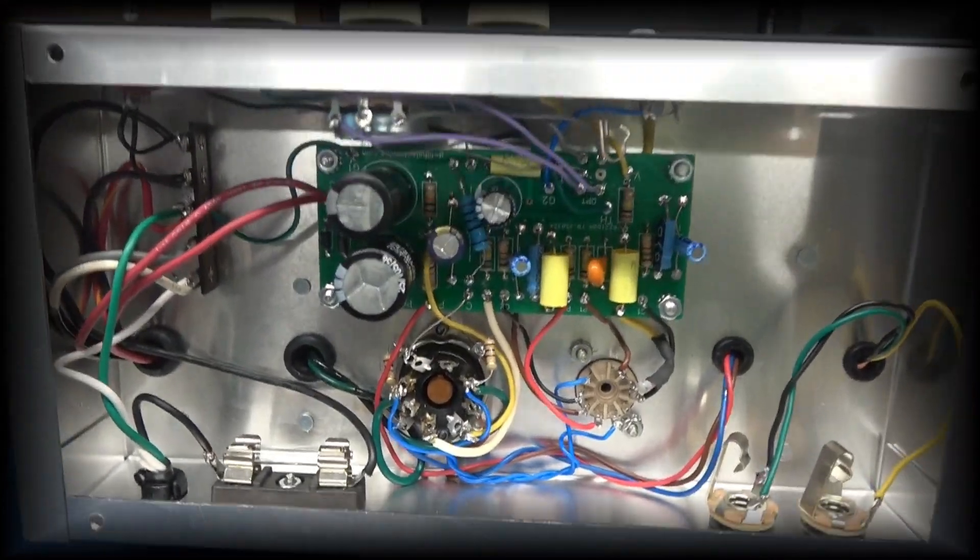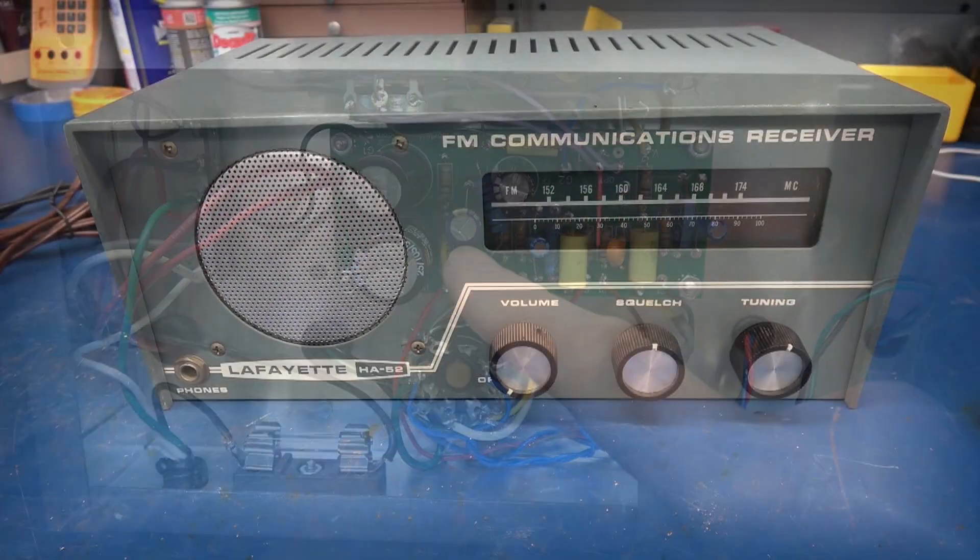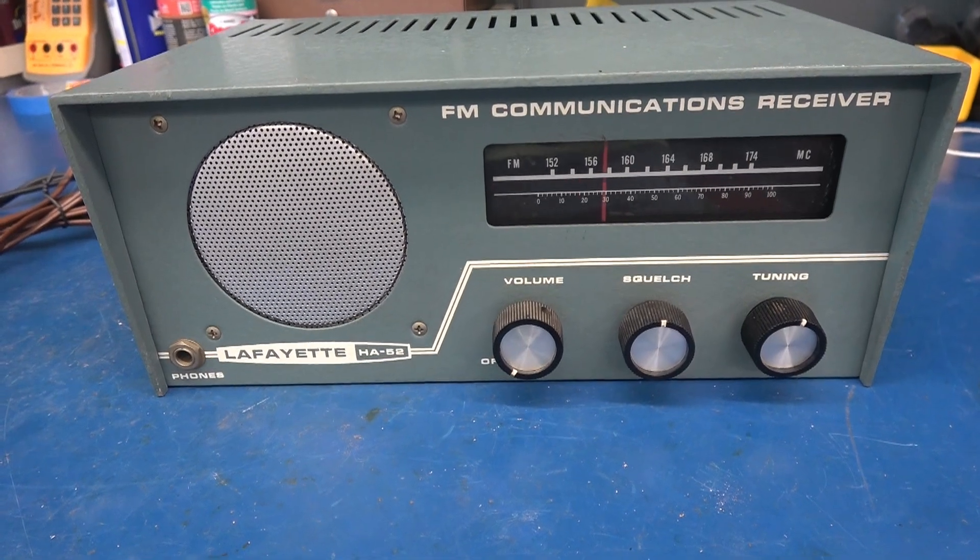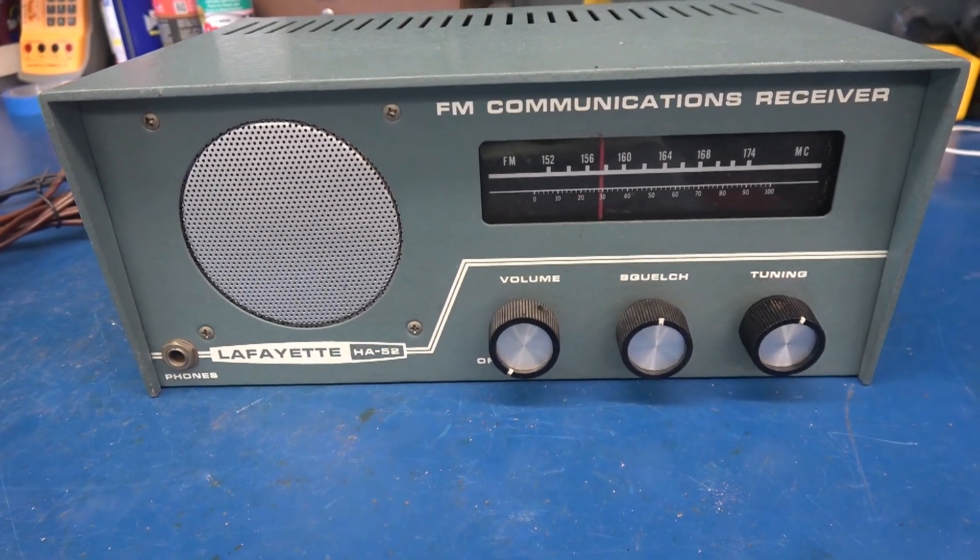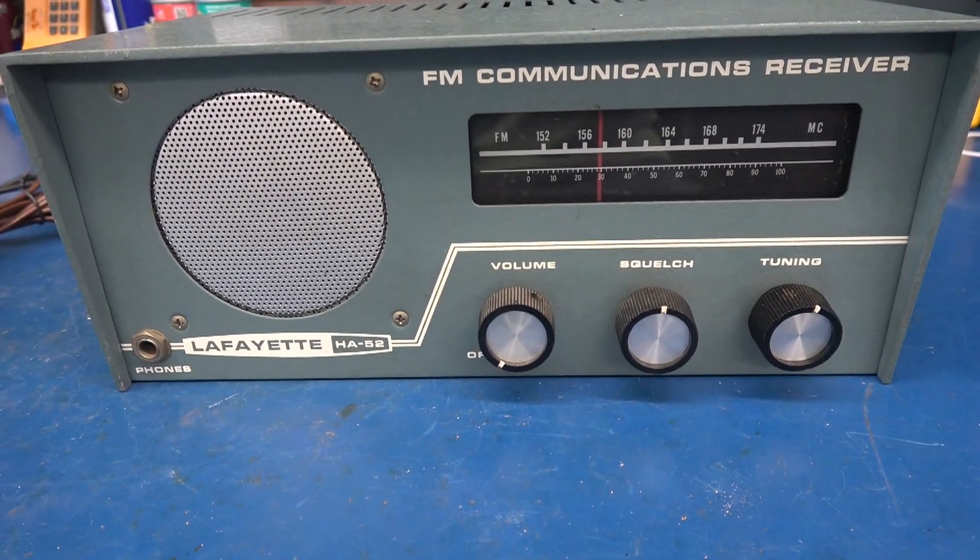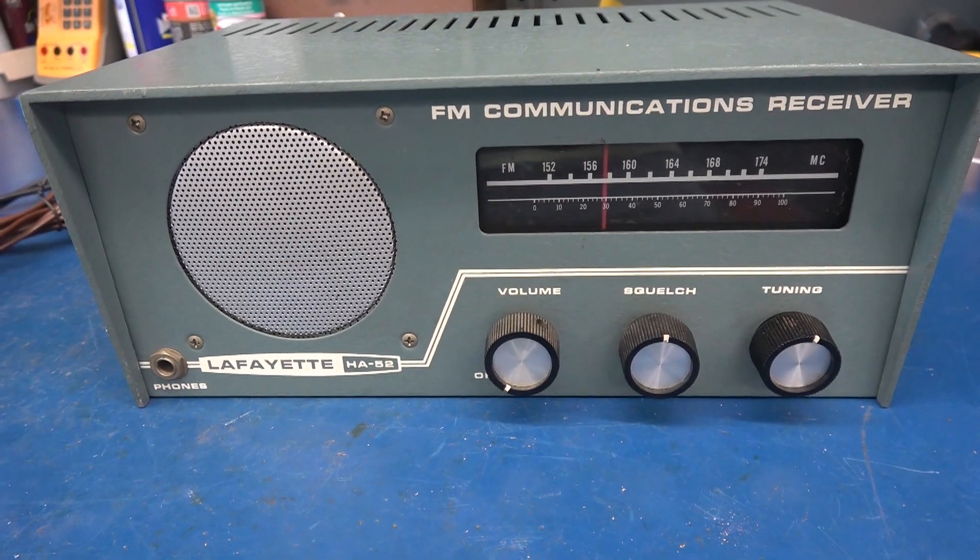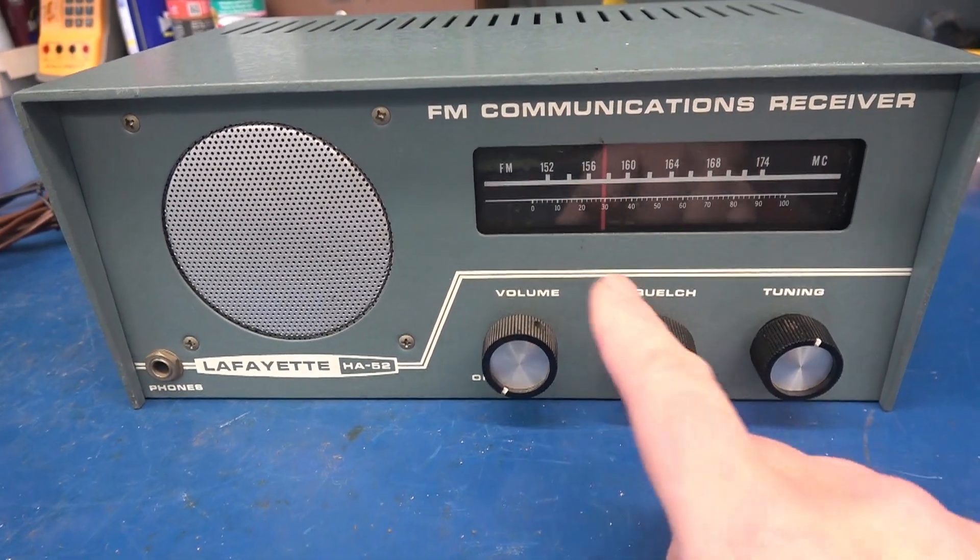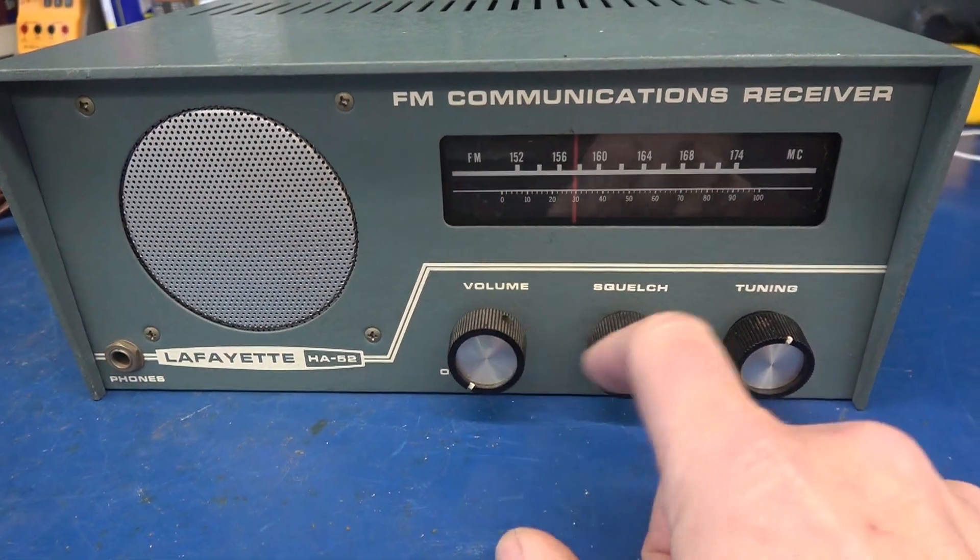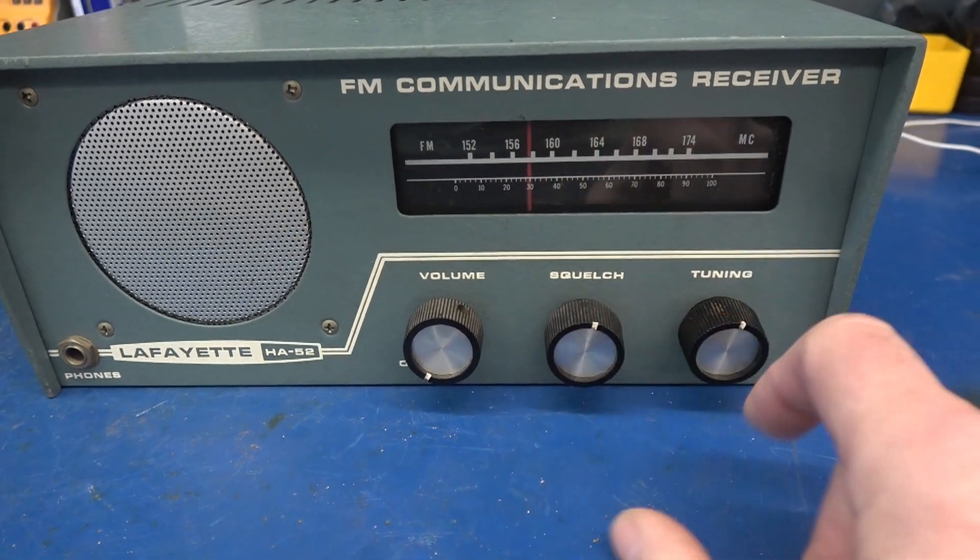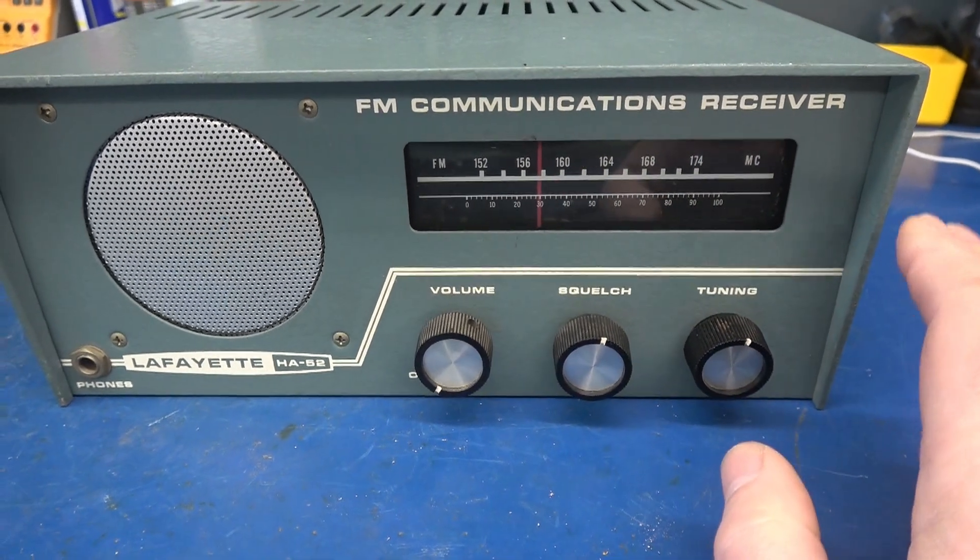Underneath is the Optiplex board. In this video, we're going to convert this Lafayette HA52 police radio into a Class A guitar amp with the Optiplex feature. Volume will stay the same, squelch will become tone, and the tuning will become the Optiplex.